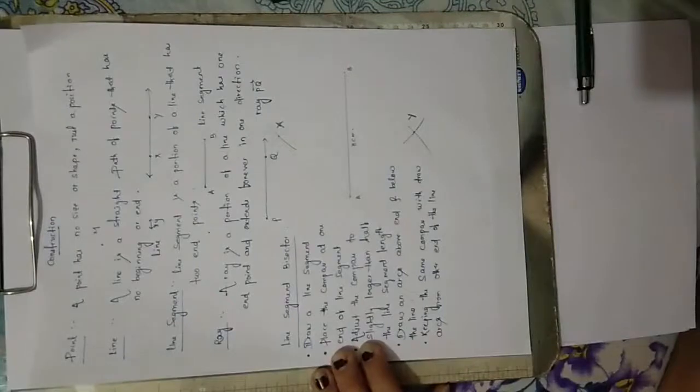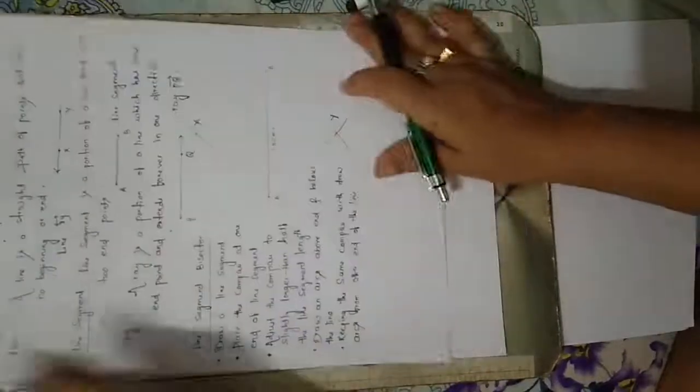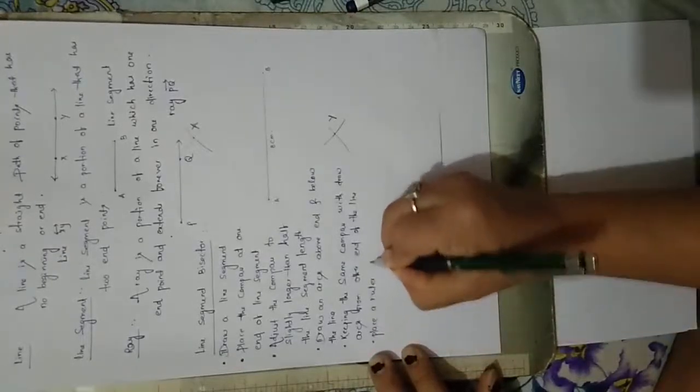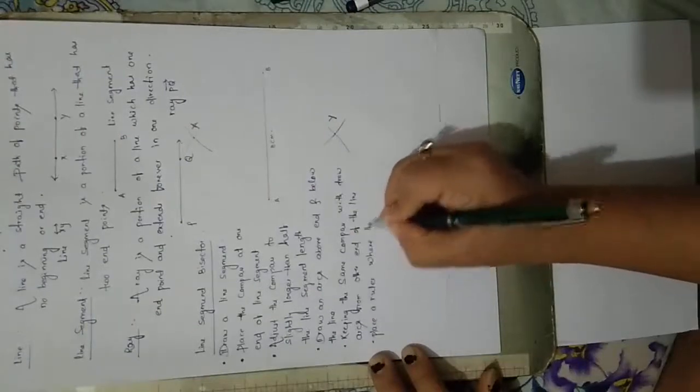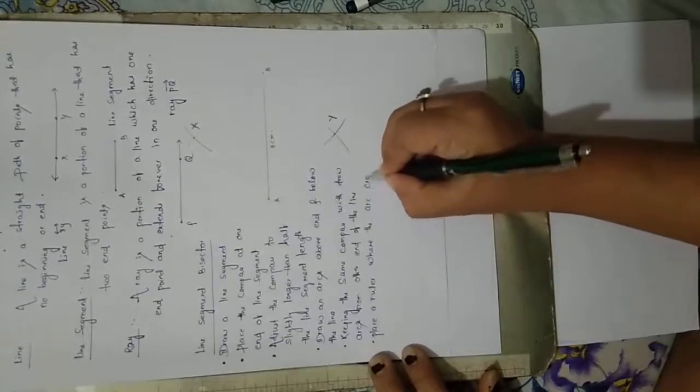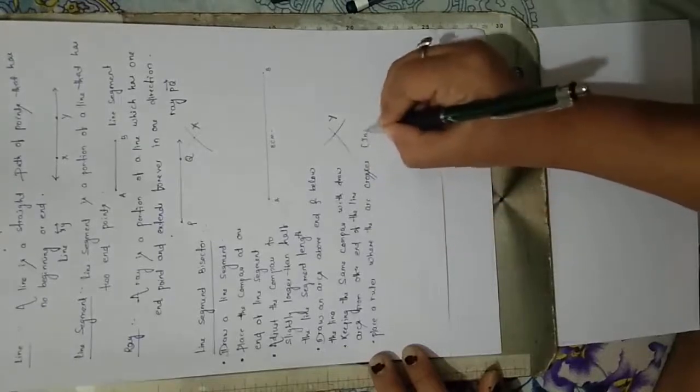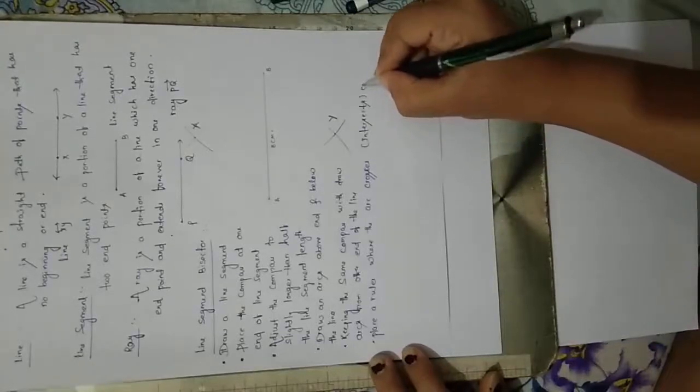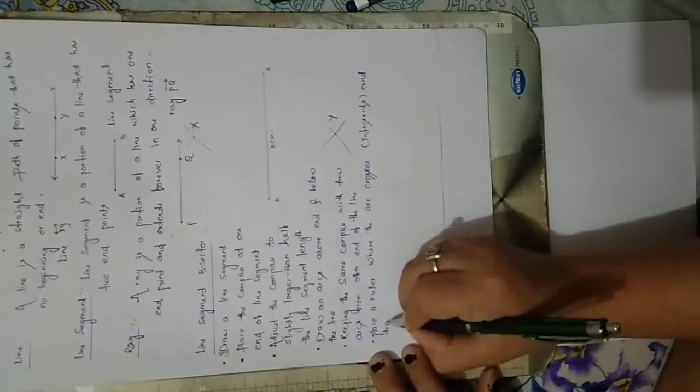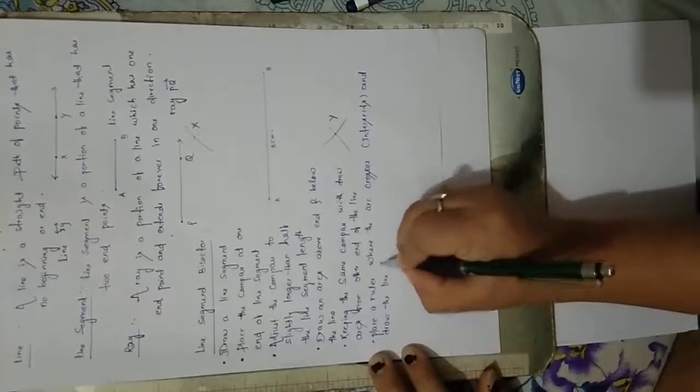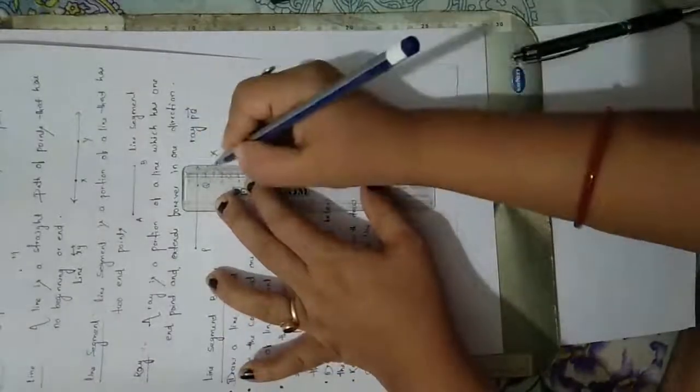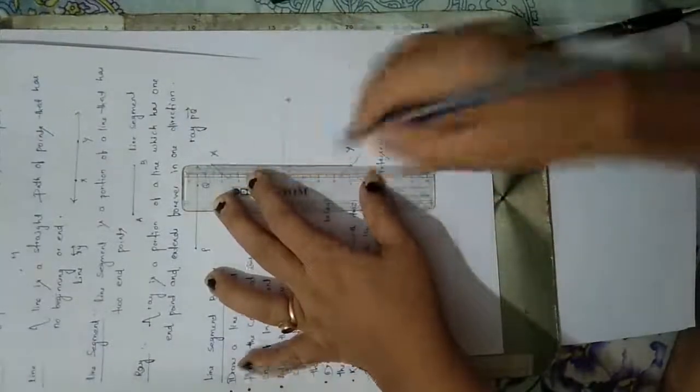Now, next step: place a ruler where the arcs cross or intersect each other, and draw the line segment. Using a scale, if I will draw a line from this point to this point, this is the line segment. This XY line.